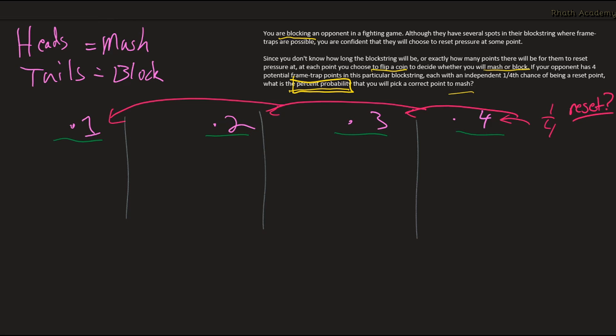So what's the probability that we mash successfully at the first point? Well, it's the probability that we mash at all, which is just a coin flip, so it's the probability that we get heads, and that this is a correct point to mash, meaning that this is a reset point. Since we're looking for the probability of getting heads, that's just a coin flip. So that's 50%, or 1/2. And the probability of this being a reset point is just a 1/4th chance. Since we're looking for the probability of both of these things happening at the same time, we're going to multiply them together. Which just gives us 1/8th, or 0.125.